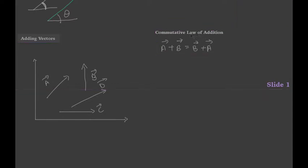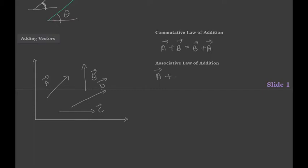Another law used in vector addition is called the associative law of addition. Essentially, vector A plus (vector B plus vector C) equals (vector A plus vector B) plus vector C. This seems obvious at first, but you'll realize that a lot of conventional addition laws do not actually apply to vector addition.